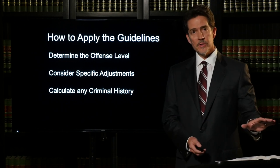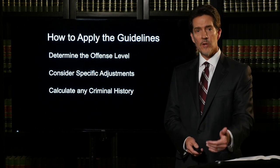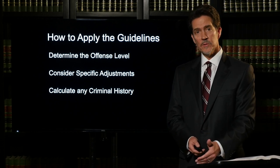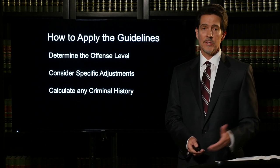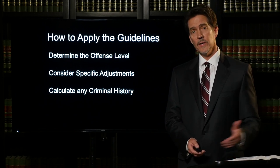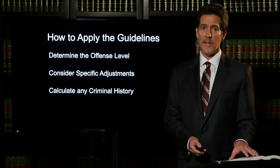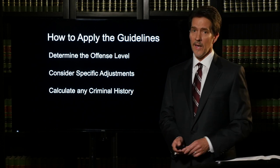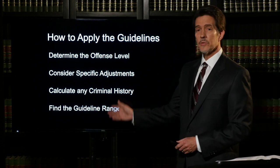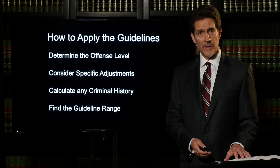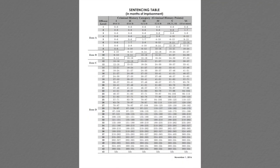After applying any adjustments, you have your total offense level, and then you move to calculating the criminal history in chapter four. You add points based on prior convictions — a felony counts more than a misdemeanor, and some convictions won't count at all depending on how old they are. You'll come up with a number that corresponds to a particular criminal history category. Once you've done all this work, the ultimate goal is to find the guideline range in chapter five, which contains a table that tells you exactly what the advisory sentencing range is.